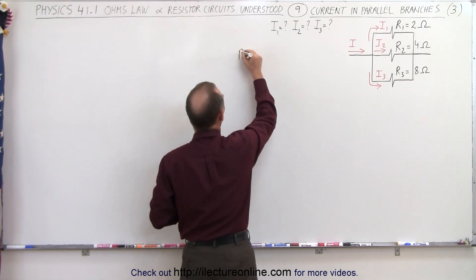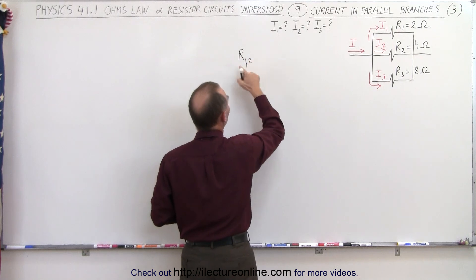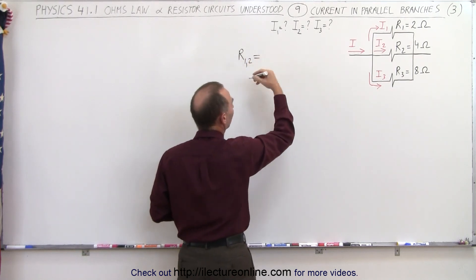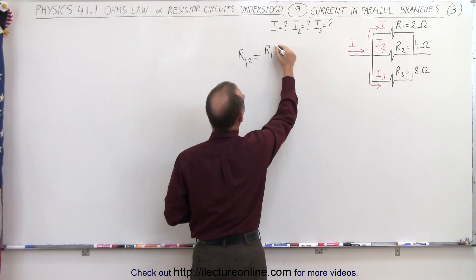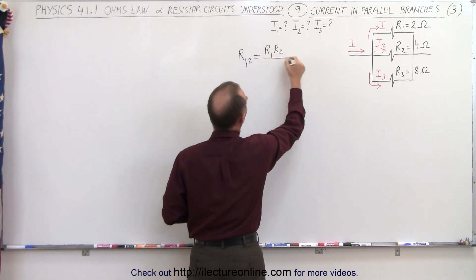We're going to find the equivalent resistance for branch one and two combined. We're going to use the product over sum rule, which means R1 times R2 divided by R1 plus R2.